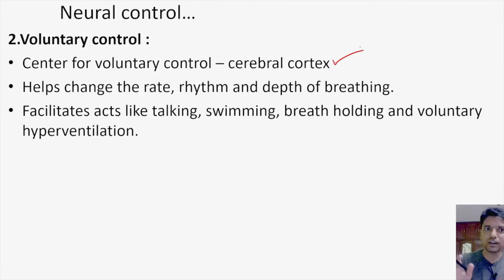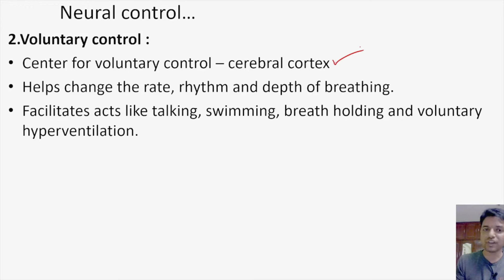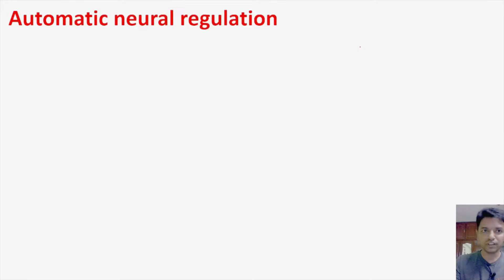To summarize: the center for involuntary control is in the brain stem, discharging spontaneously and rhythmically so the person breathes even without consciousness. Voluntary control comes into action when I voluntarily want to change the rate, rhythm, and depth of breathing, with its center at the cerebral cortex. One is at the level of the brain stem, another at the level of the cerebral cortex. Today we will study only the automatic control — the involuntary control of respiration.